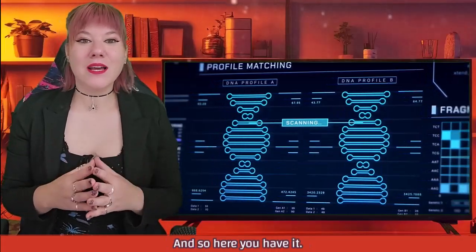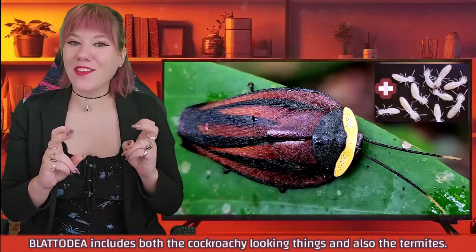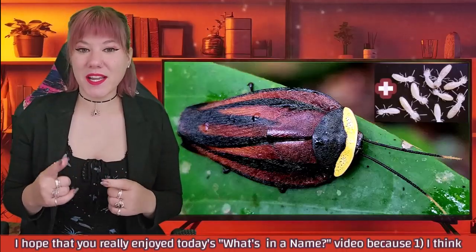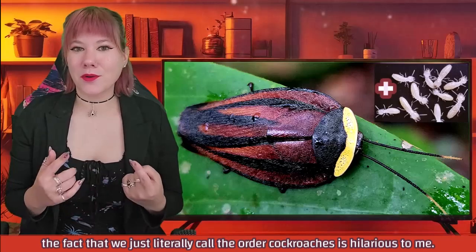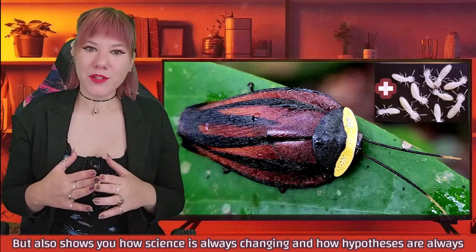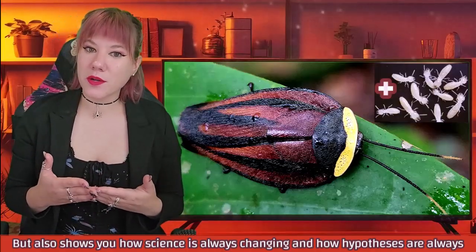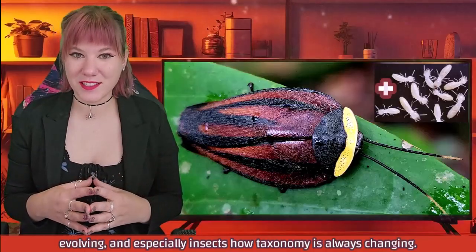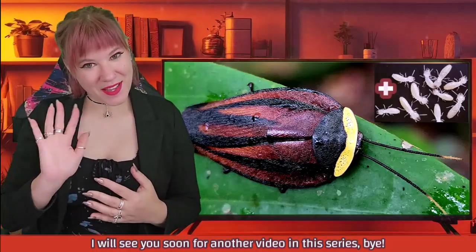And these were all the pieces of the puzzle that basically confirmed that termites are just weird eusocial cockroaches that kind of did their own thing — but they do belong together. So here you have it: Blattodea includes both the cockroachy-looking things and also the termites. I hope you really enjoyed today's What's in a Name? video, because I think the fact that we literally called the order 'cockroaches' is hilarious — but it also shows you how science is always changing and how hypotheses and taxonomy are always evolving, especially in insects. I will see you soon for another video in this series. Bye!